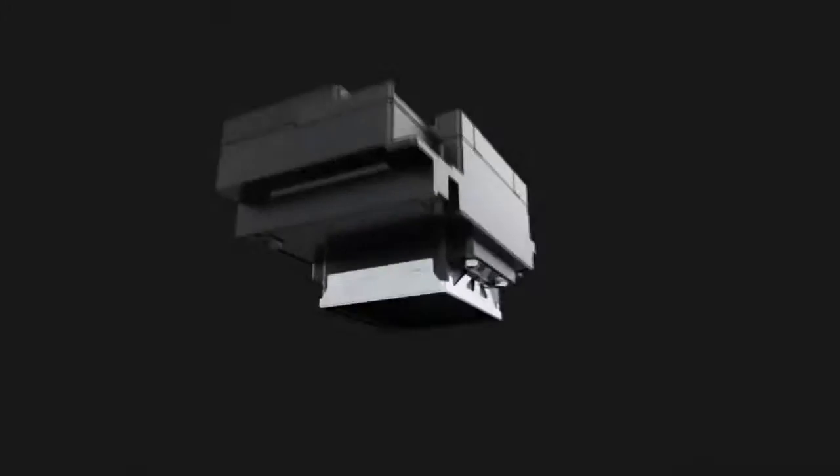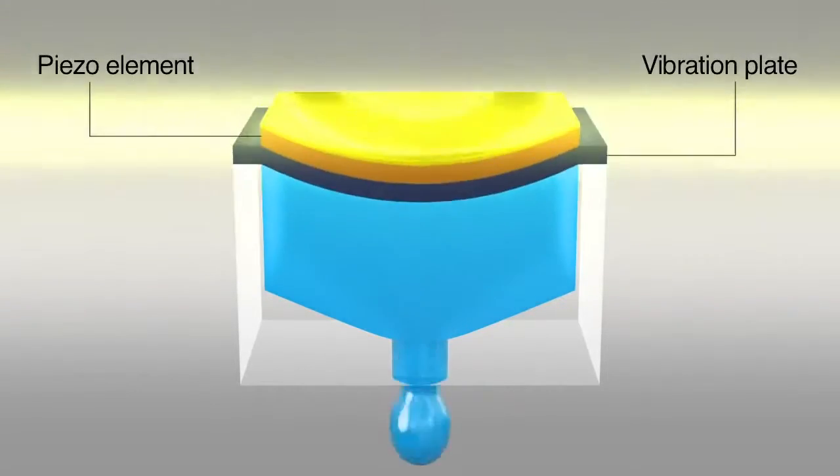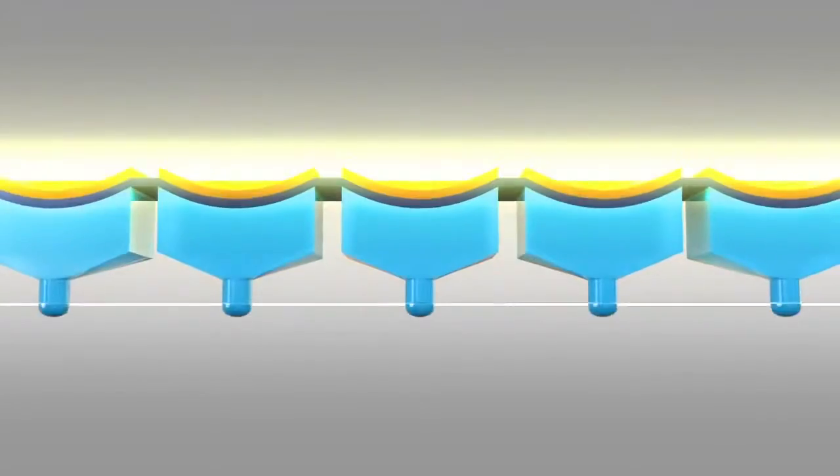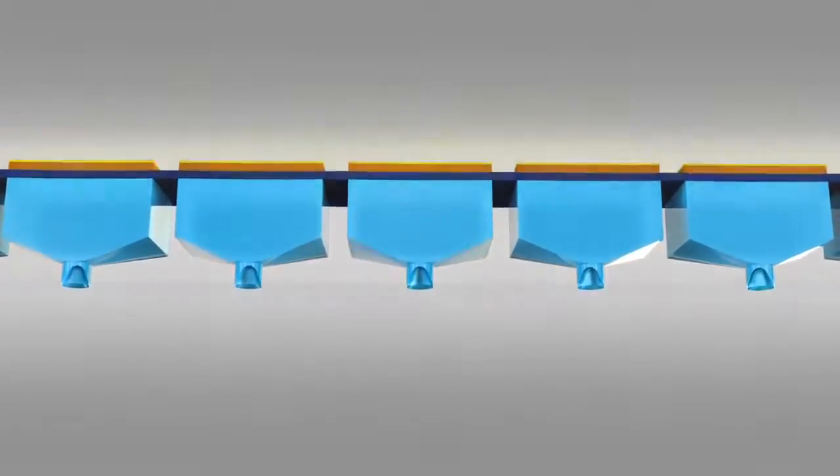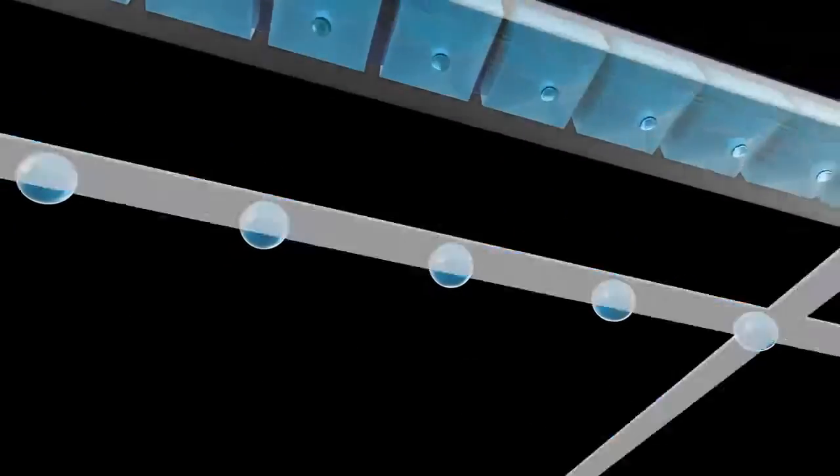Each MicroPiezo print head contains rows of densely arranged nozzles. These are driven by individual microns-thin piezoelectric elements that contract when voltage is applied, moving a vibration plate more than 40,000 times a second to produce a precise stream of microscopic ink droplets.